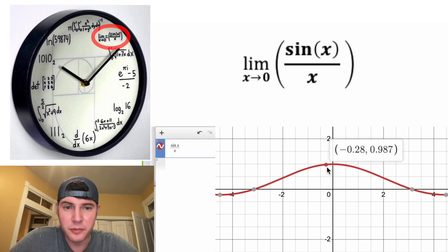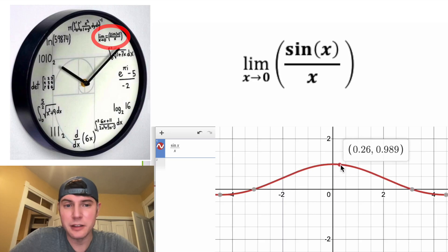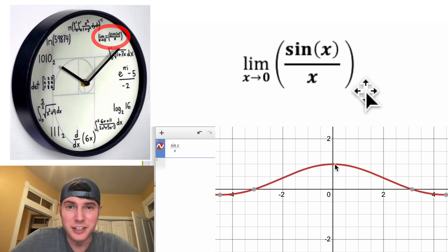From the right, it approaches one, and from the left, it approaches one. Zero itself is not defined, but that's why we take the limit, and we can see the limit approaches one. So that's why this represents the one o'clock hour, because it's equal to one.